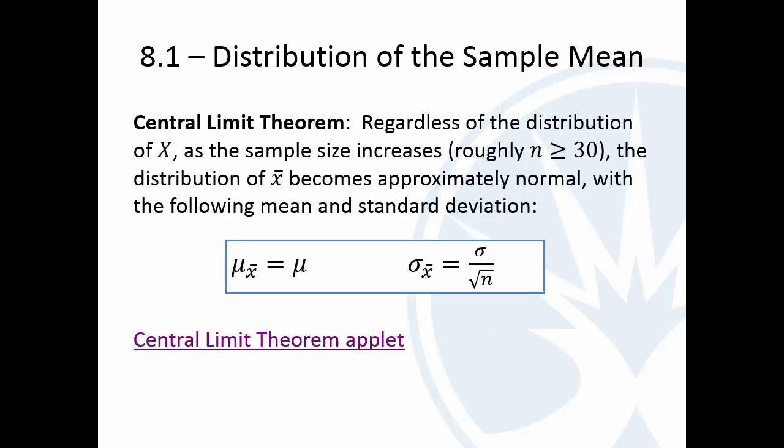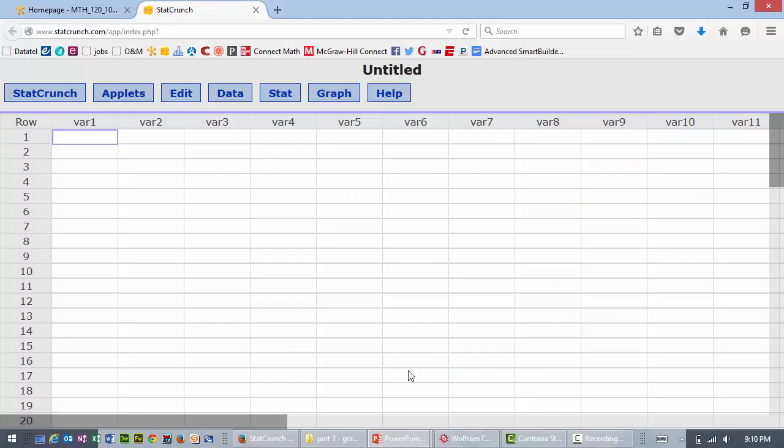It says no matter how the original variable is distributed, as the size of our sample increases, roughly cutoff with about 30, as long as we have at least 30 in our sample, the sample mean distribution will be approximately normal with this mean and standard deviation. Now, this to me is crazy, but let me show you what this means.